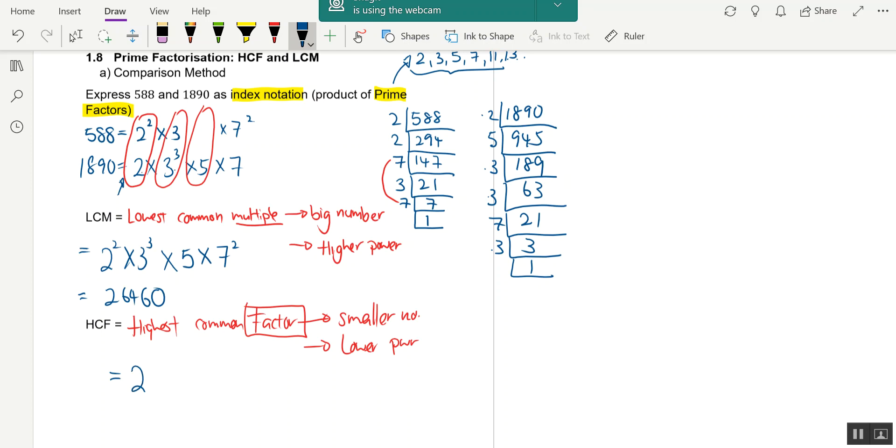3 and 3³, we take 3. There's a 5 here but no 5 there, so we cannot take it. Then 7² and 7, the lower one is 7. So 2 times 3 is 6, 6 times 7 is 42. This comparison method is the most common method you need to master when you're looking for the HCF or LCM of two numbers.